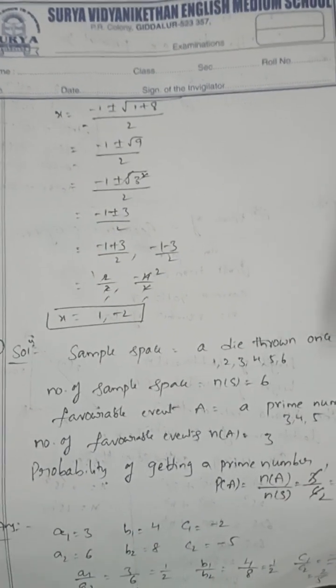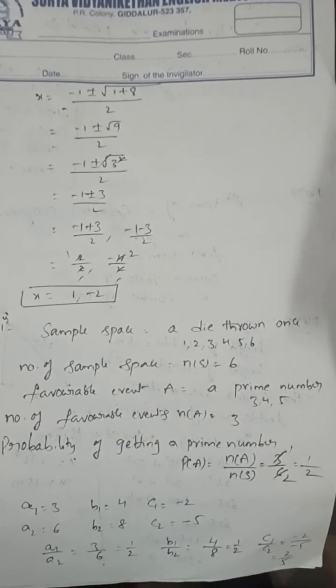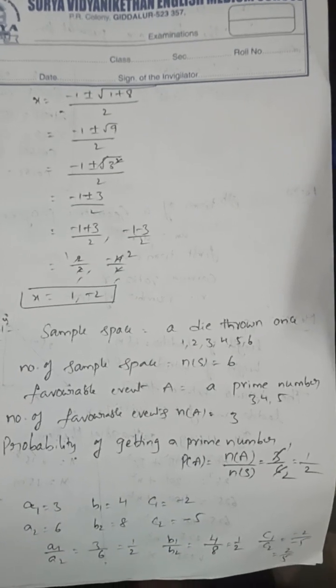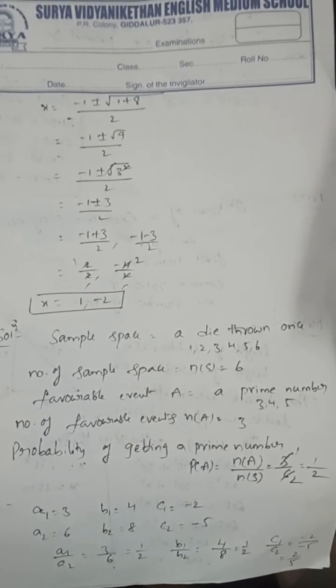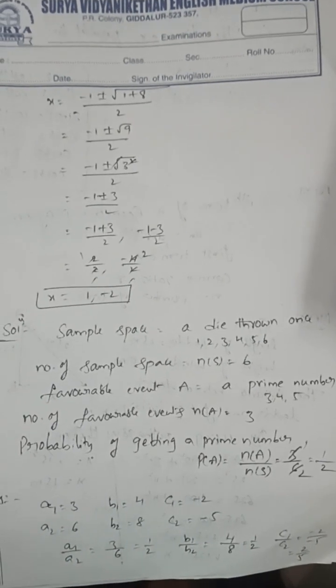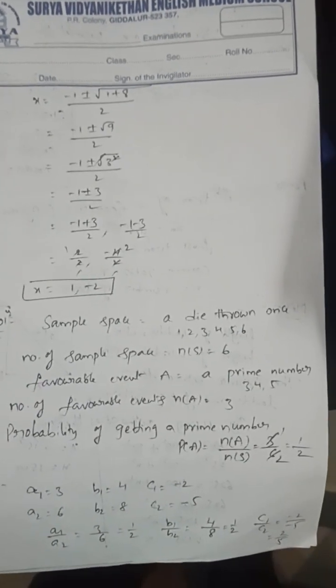Find the probability that when a dice is rolled, what is the probability of getting a prime number? When a dice is thrown, there are 6 chances: 1, 2, 3, 4, 5, 6. Prime numbers are 2, 3, 5. So P(A) = n(A)/n(S) = 3/6 = 1/2.